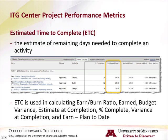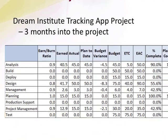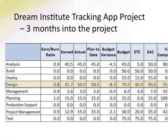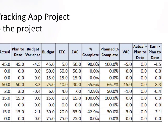Let's see an example of these metrics in the Dream Institute tracking app project. Let's revisit the project three months in and look at the design activity. We saw previously that actuals and plan to date still looked good, but that some of the other metrics, such as the earned-burn ratio, are showing some variance. If we look at the estimate at completion, EAC — which is the sum of actuals and ETC and is a prediction of total effort at the project's completion — we see that we are predicting that the project will complete over budget.